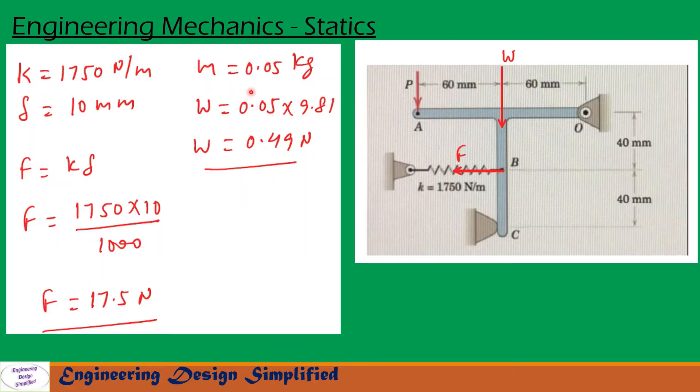Mass of the body is given as 0.05 kg, so its weight will become 0.05 into 9.81, that is 0.49 newton. The spring constant is given 1750 newton per meter and stretch is given 10 millimeter.